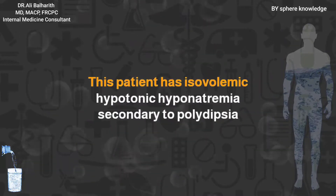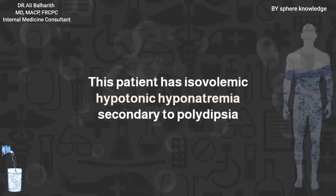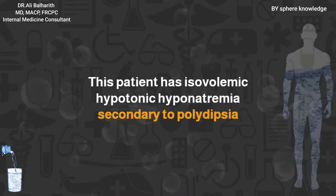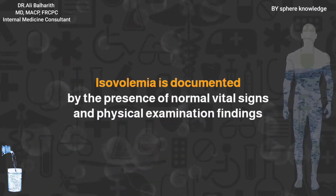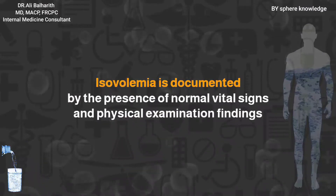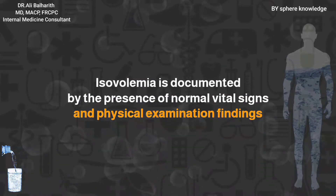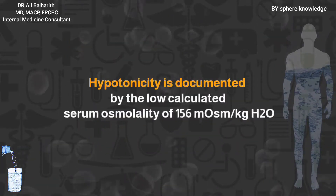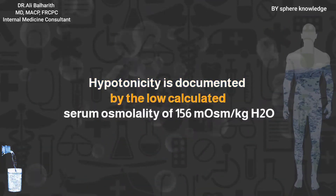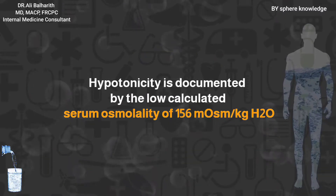This patient has isovolemic hypotonic hyponatremia secondary to polydipsia. Isovolemia is documented by the presence of normal vital signs and physical examination findings. Hypotonicity is documented by the low calculated serum osmolarity of 156.